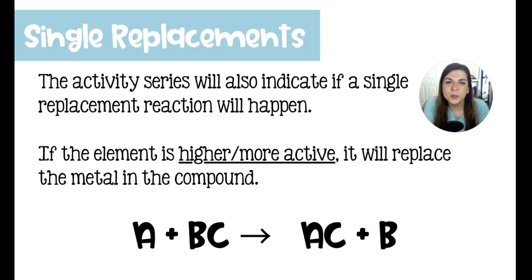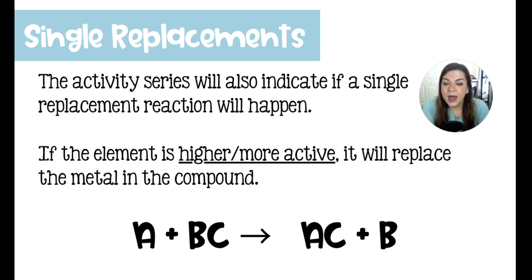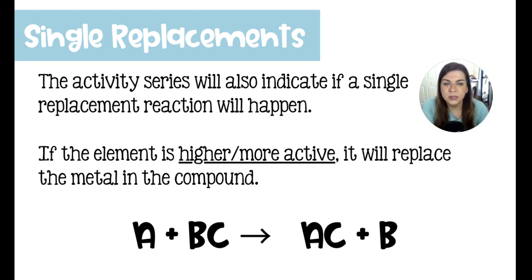You can also use the activity series to determine if a single replacement reaction is actually possible as written. Just because we write things on paper does not make them true. If we have a lone element — say element A — and that element is higher on the activity series than the element it is looking to replace, it will successfully replace that element. So A + BC yields AC + B, where A kicks out B and takes its place. This can also be true for non-metals. It depends whether it's a metal or non-metal as to which side of the activity series you look at.